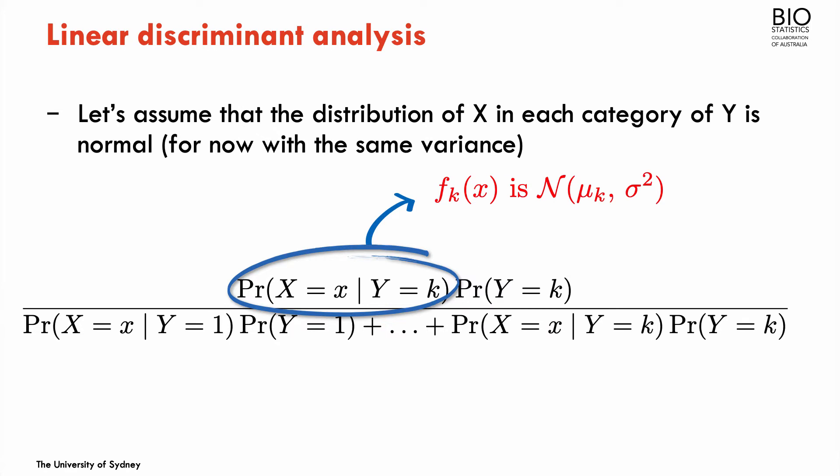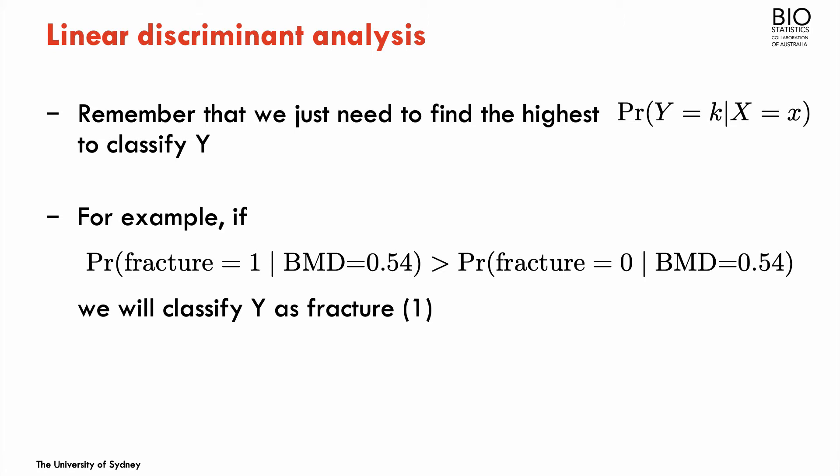I'm going to assume that the distribution of x is normal with a certain mean and certain variance. We can extend this to multiple covariates, and in that case I assume the joint distribution of all predictors is multivariate normal with a vector of means and a covariance matrix. We just need to find which of the probabilities for the different categories k is the highest, and then classify the unit with the category having the highest probability. For example, if the probability of fracture given a bone mineral density of 0.54 is higher than the probability of no fracture, then we classify the individual as a fracture. We don't need to estimate the exact probability — just knowing which one is higher is enough to make the classification.